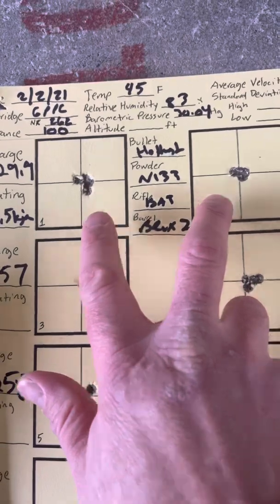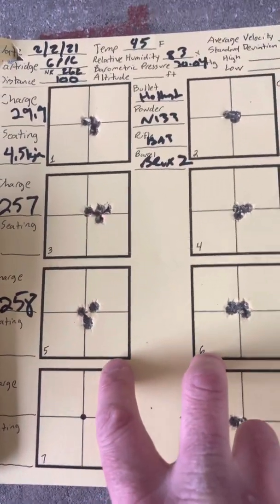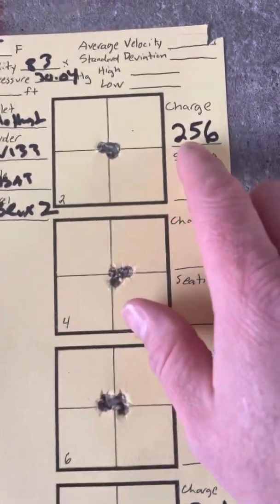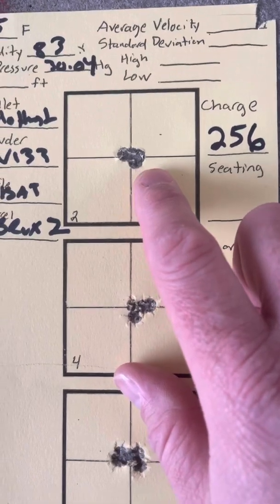And in the non-windy condition, the .256 neck bushing produced a pretty small group there.